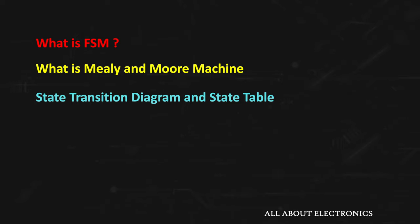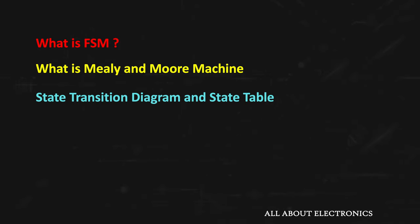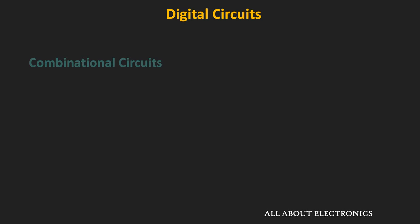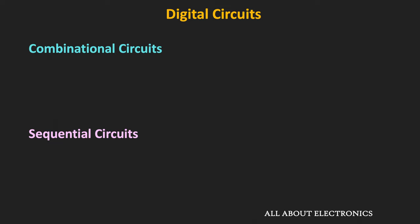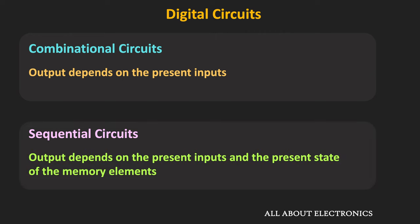First of all let us understand what is FSM. This FSM or the finite state machine is a model to represent the sequential circuits in an abstract way. In the earlier videos we have already seen the combinational and the sequential circuits. In the combinational circuits the output only depends on the present inputs to the circuit, while in the sequential circuits the output not only depends on the present inputs but it also depends on the present state of the memory elements, which is essentially a group of flip-flops. That means in the sequential circuits the output depends on the present states of the flip-flops as well as the present inputs to the circuit.